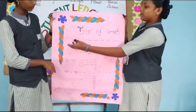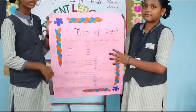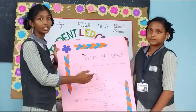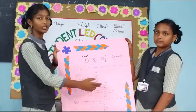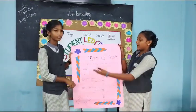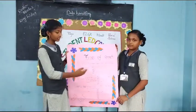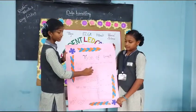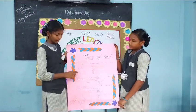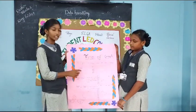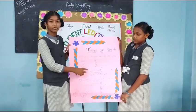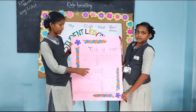Bhavani, what is meant by pictograph? Pictograph means the data represented using pictures is known as pictographs. Can you give one example for pictograph? Yes. In this example, there are 70 animals — one symbol is equal to 10 animals, and a half symbol is equal to 5 animals.